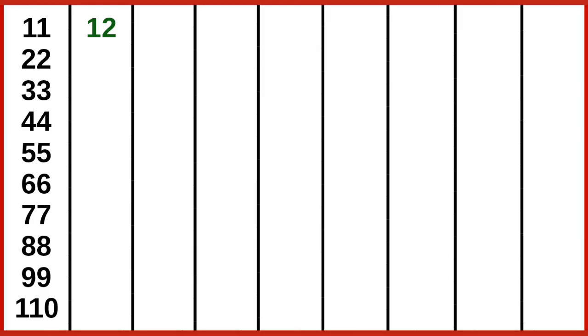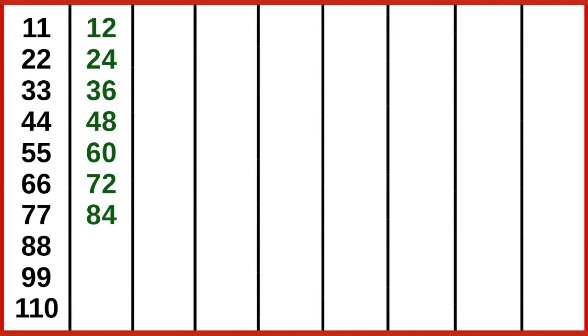12 ones are 12, 12 twos are 24, 12 threes are 36, 12 fours are 48, 12 fives are 60, 12 sixes are 72, 12 sevens are 84, 12 eights are 96, 12 nines are 108, 12 tens are 120.